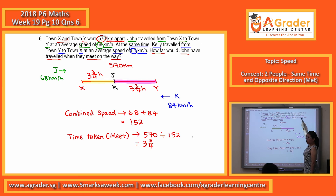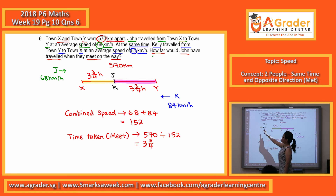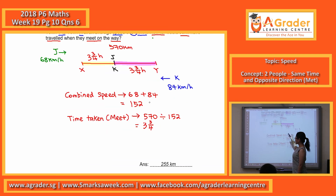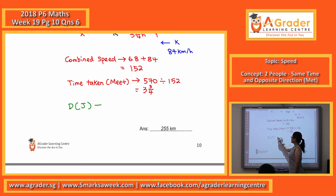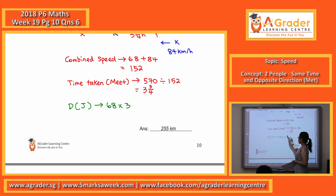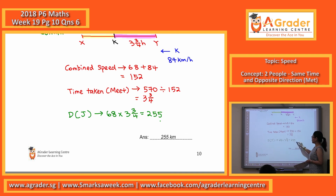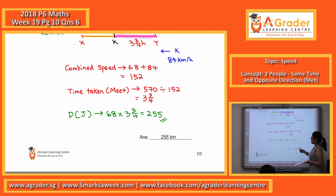Because the question only asks for John, John's distance will be based on John's speed multiplied by the time taken. John's distance will therefore be 255 km. Please take note — it's distance, so the measurement you need involves km.